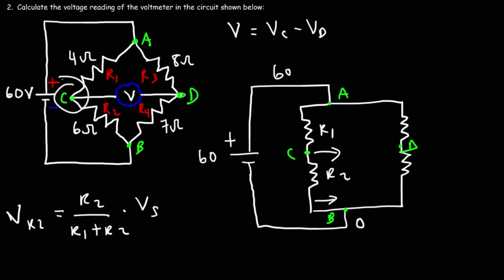So this particular circuit is unbalanced, which means that the potential at C will be different than the potential at D. Now, if the circuit was balanced, the voltage that would be read by the voltmeter will be zero. VC would equal VD. So we don't have a balanced condition. So that means V is some number other than zero. So let's go ahead and use this formula.